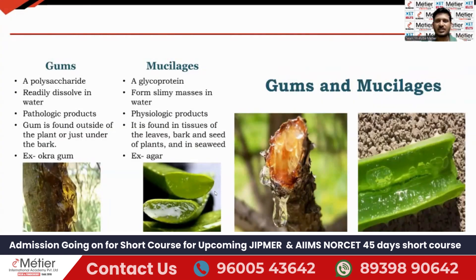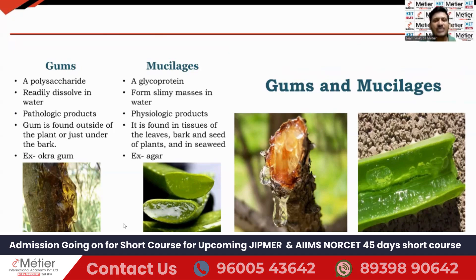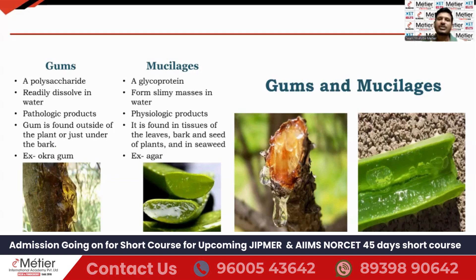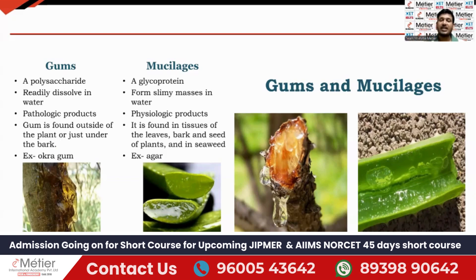Now let's explain gums and mucilages — you can see the image provided. Gums are formed when a tree is cut or its branch is damaged — a gum-like substance comes out. That is called gum. It is a polysaccharide that can readily dissolve in water, making it a water-soluble dietary fiber.